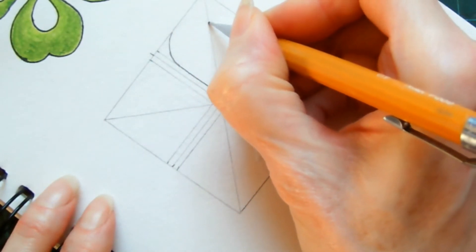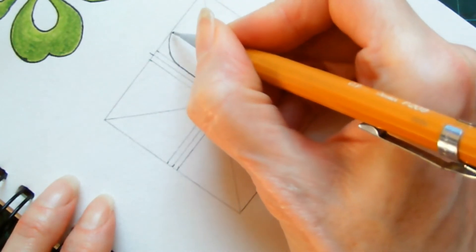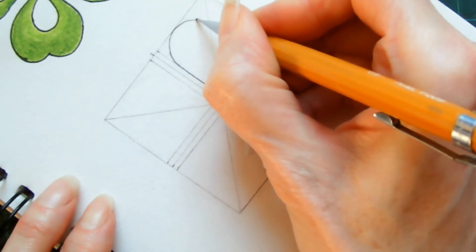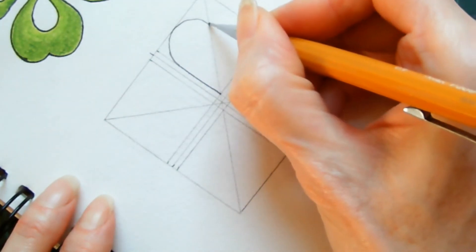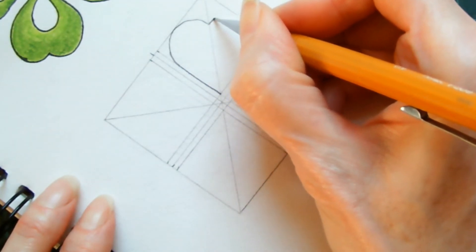Basically like so. And then you repeat that on the other side, so you curve back up so it looks like a heart, reach the outer edge, curve back down so it meets this guideline.